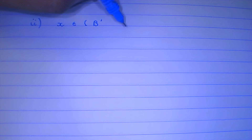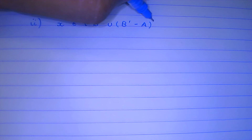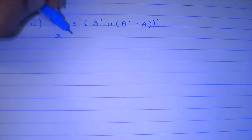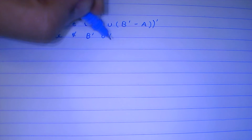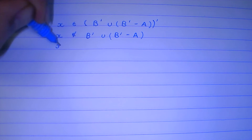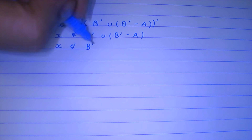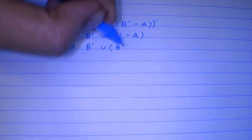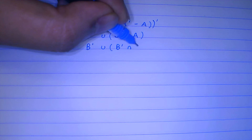Now we come to the second portion. We will do this the same way: x, an arbitrary element, belongs to the expression (B' ∪ (B' - A)), whole complement. So x does not belong to B' ∪ (B' ∩ A'), which follows from the definition of symmetric difference.